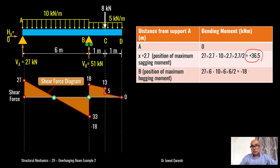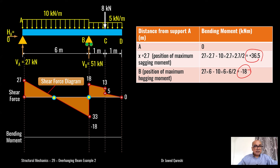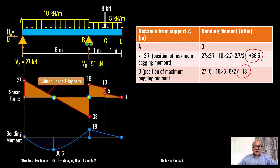Once I've got these values I can plot them on the diagram. The first value is the maximum positive moment of +36.5, and the next value is −18, which is the hogging moment. You can then shade this diagram to make it look beautiful, and once complete, this is the bending moment diagram.